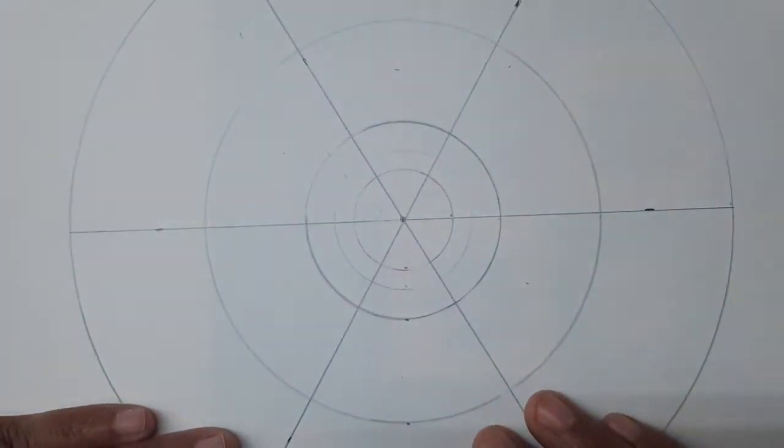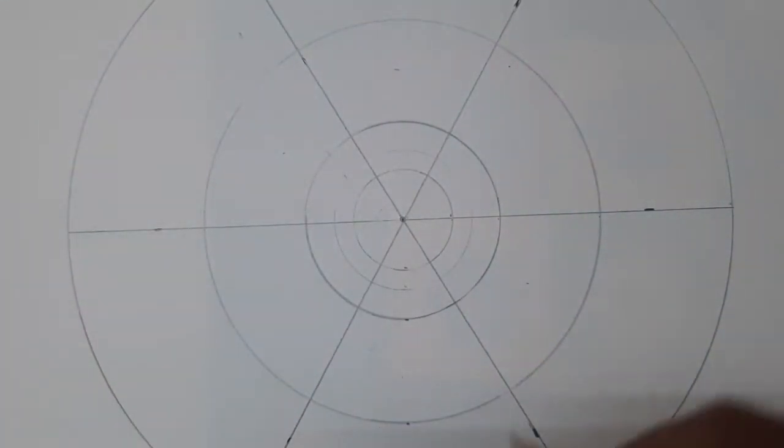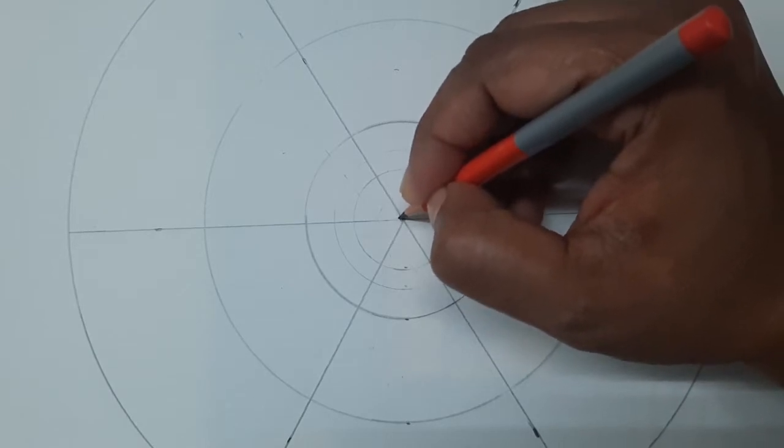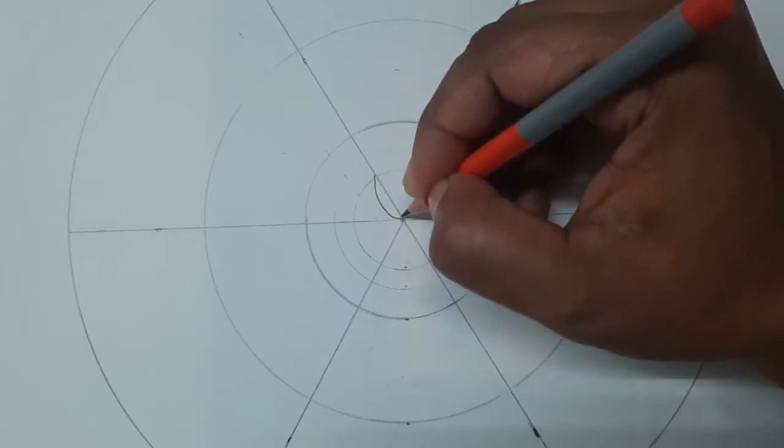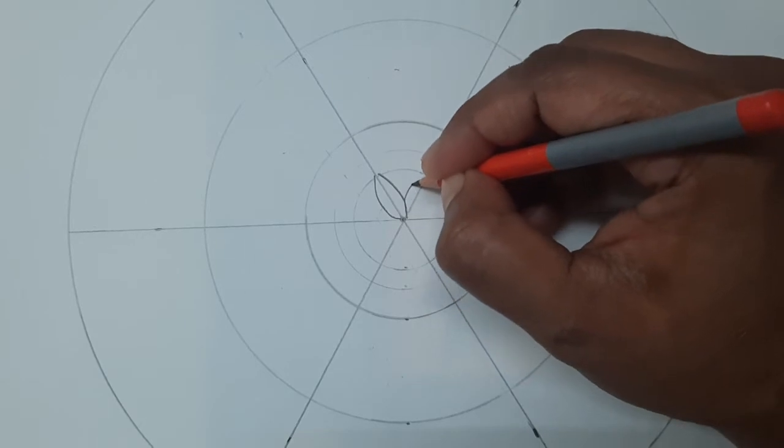Let's start drawing the patterns in the first circle. This is the pattern that I'm making: simple leaves.